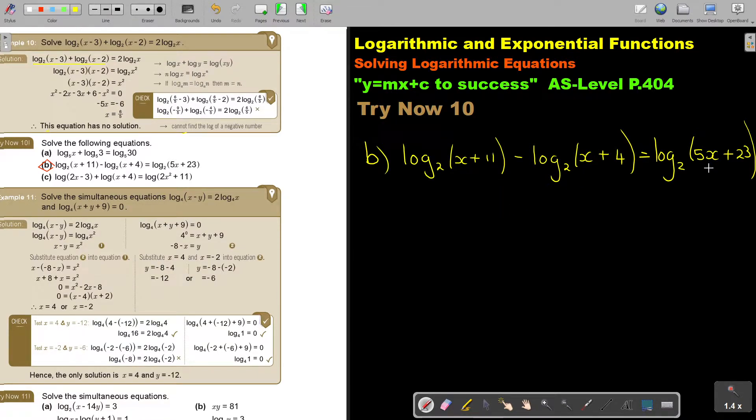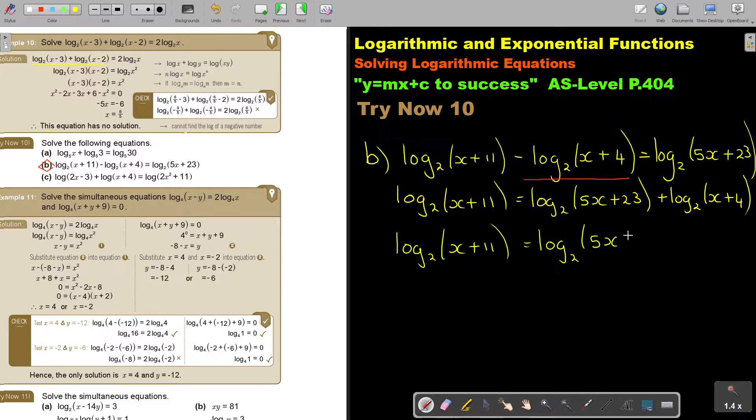But I think it's always easier to do the product rule. So look what I'm going to do with this one. I'm first going to take this negative one over. So I'm going to end up with (x plus 11) equals log base 2 of (5x plus 23) plus log base 2 of (x plus 4).